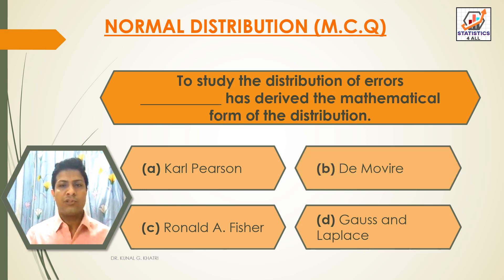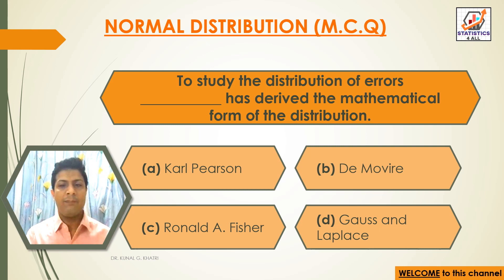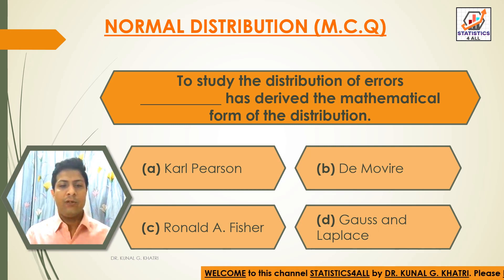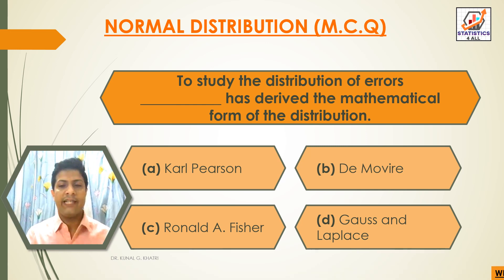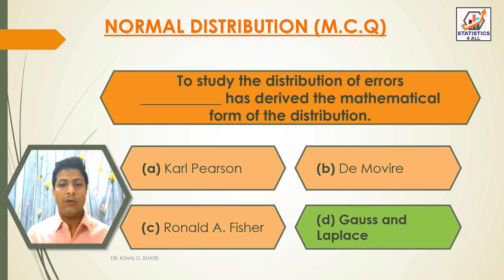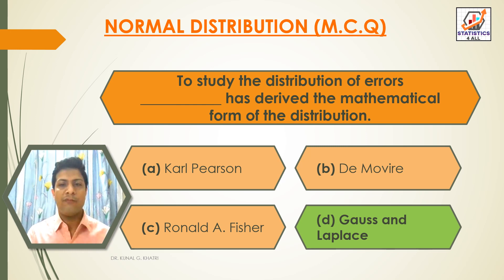Next question: to study the distribution of errors, dash has derived the mathematical form of the distribution. Option A: Carl Pearson. Option B: De Moivre. Option C: Ronald A. Fisher. Option D: Gauss and Laplace. The answer is Option D — Gauss and Laplace derived the mathematical form of the distribution.